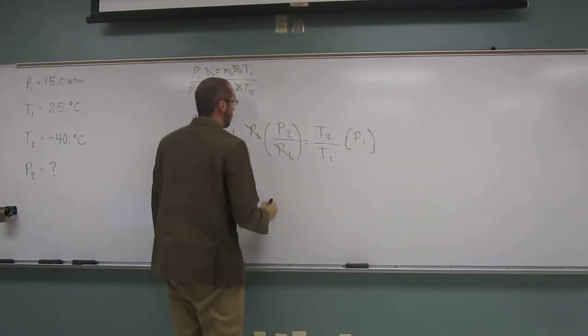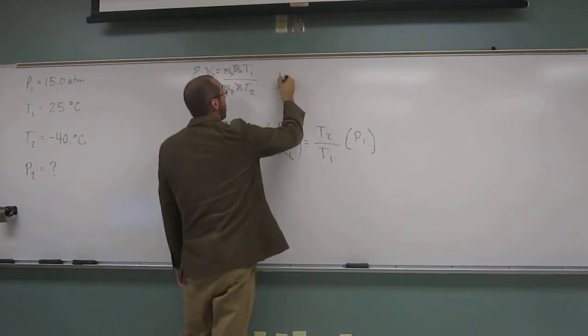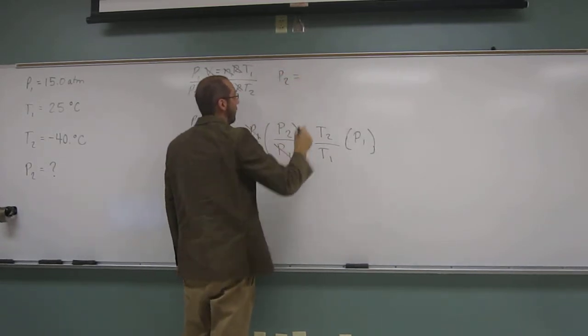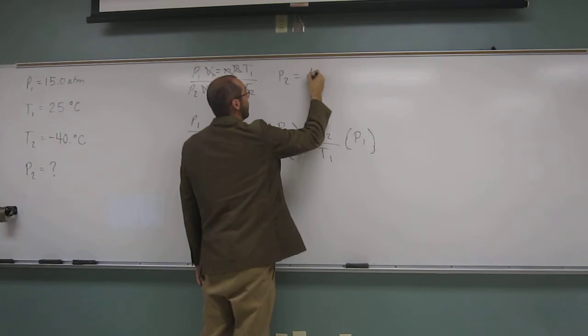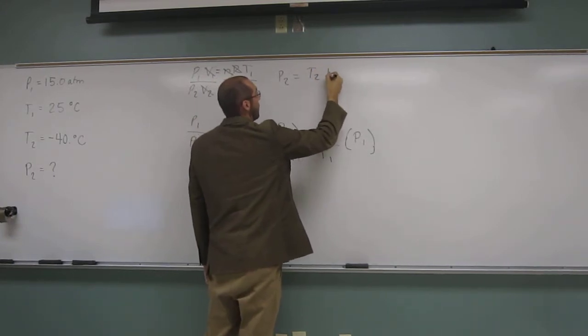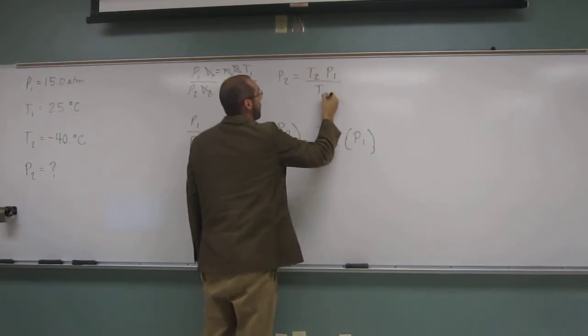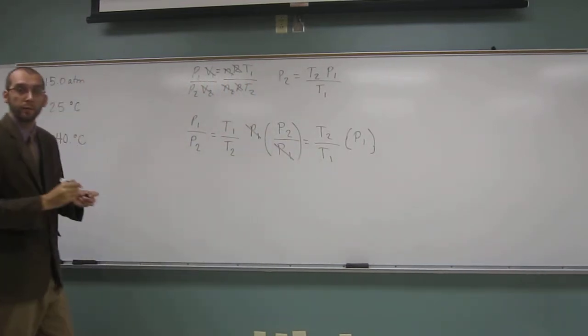So let's just write the final equation up here. So P2 equals T2 times P1 divided by T1. Like that.